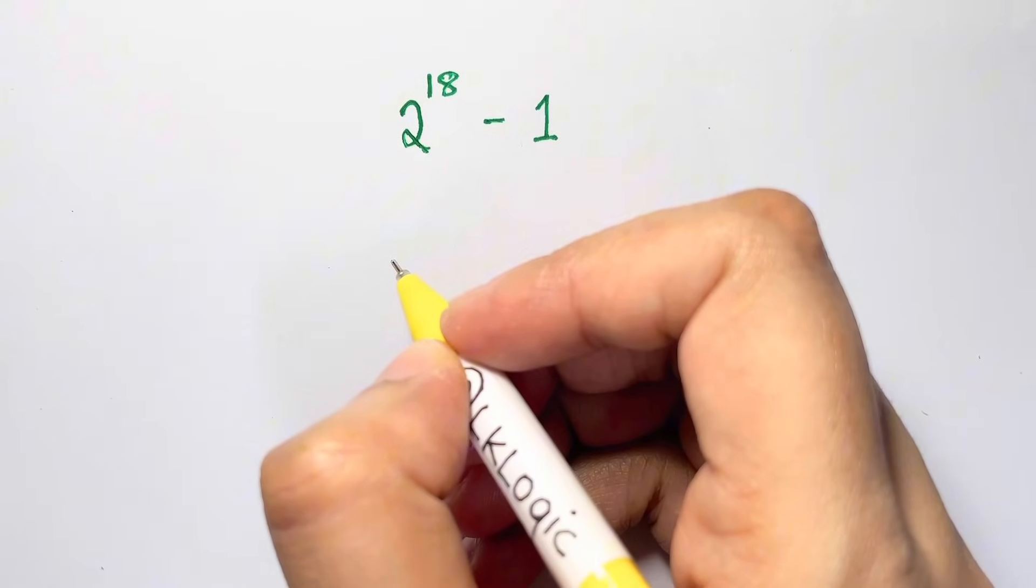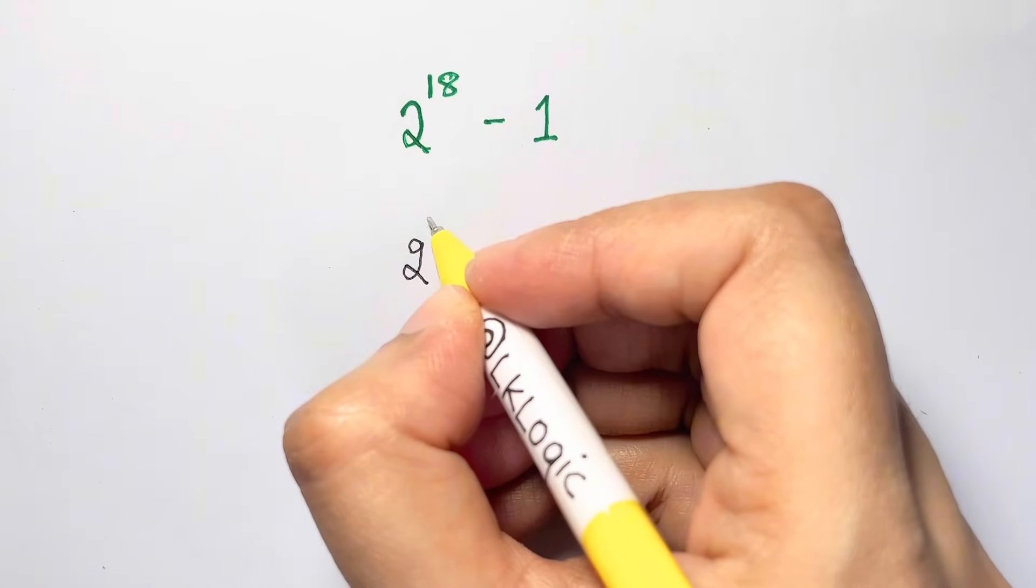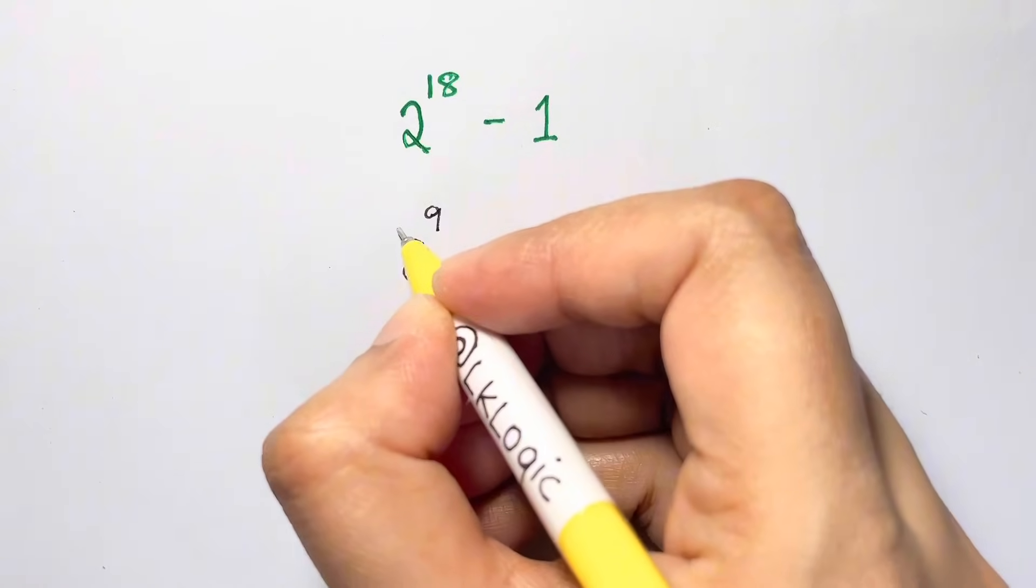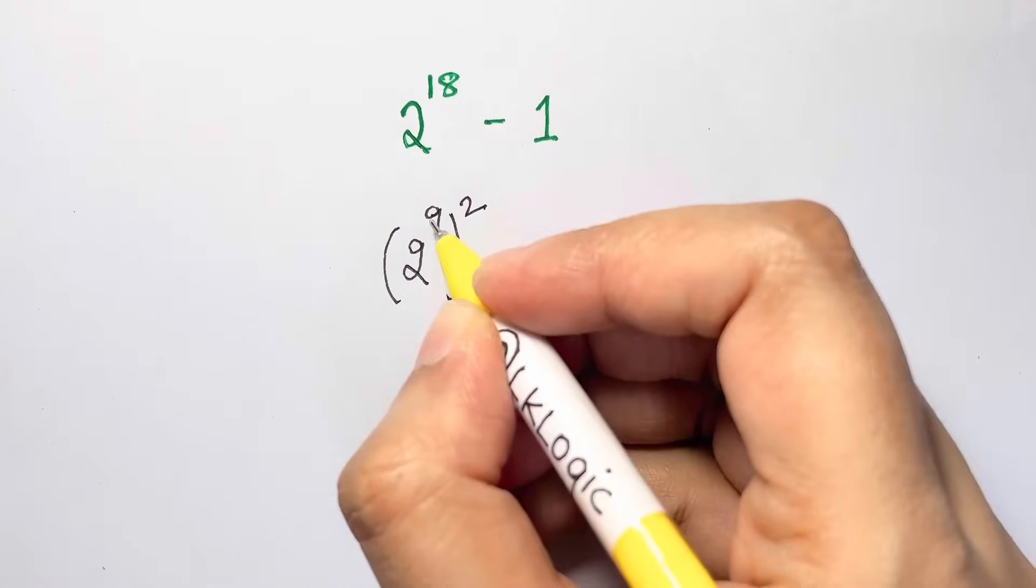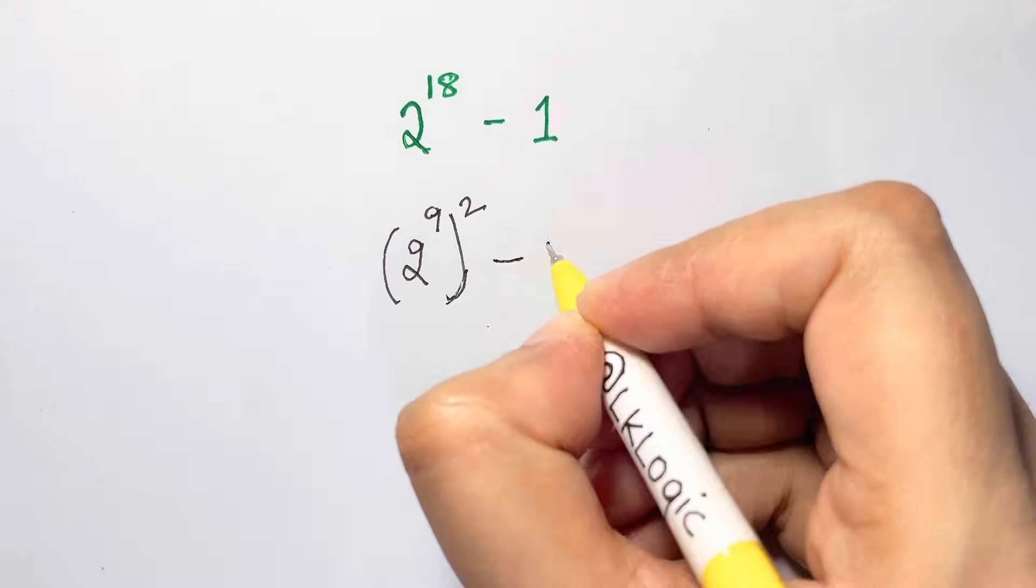We are going to write it as 2 to the power of 9 times 2 is 18. So we know that 9 times 2, so we can write it like this: 2 to the power of 9 times 2 is 18 minus 1.